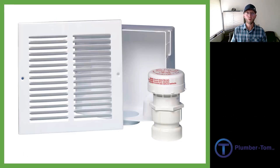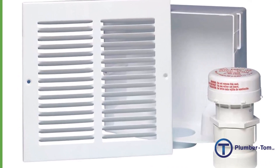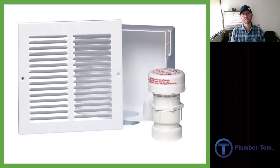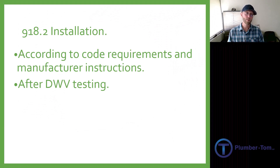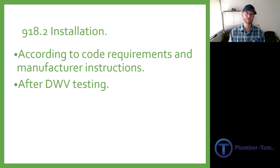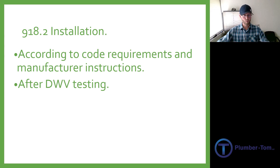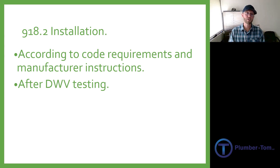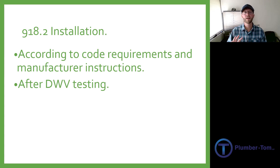Air admittance valves have become more and more common over time, especially when manufacturers started producing recessed wall kits. 918.2 states that when installing these we have to make sure we're following the manufacturer's instructions, and that these come in after the drainage waste and vent testing. So we rough in all of our pipes, put the test on, have our inspection, and then after that we would install the air admittance valve. These valves should not be installed before we do our pressure test.